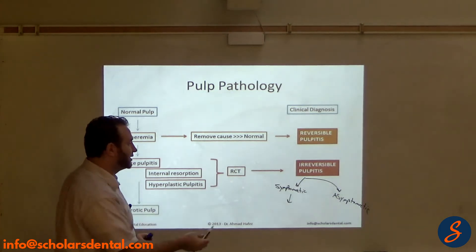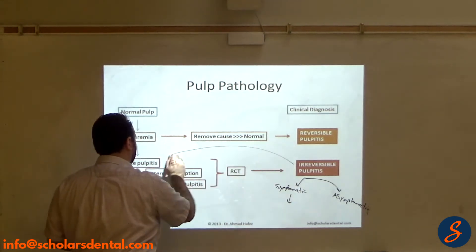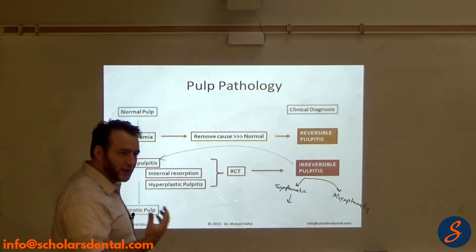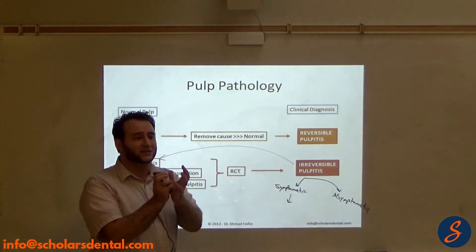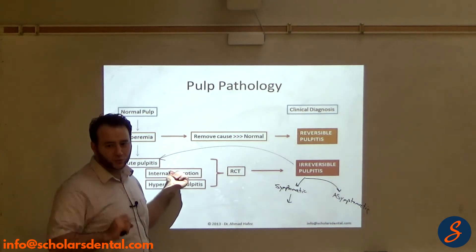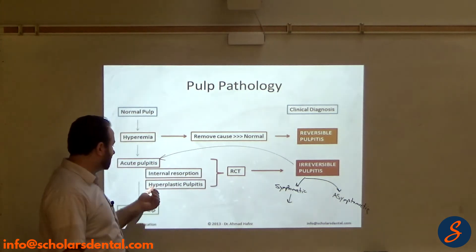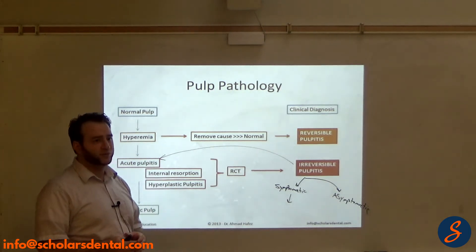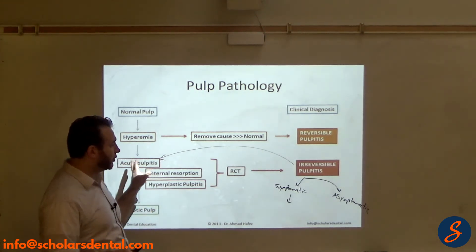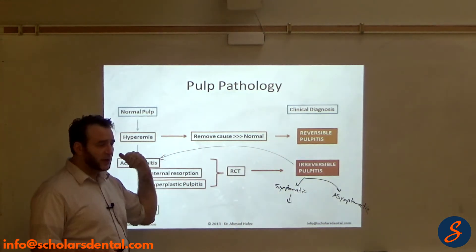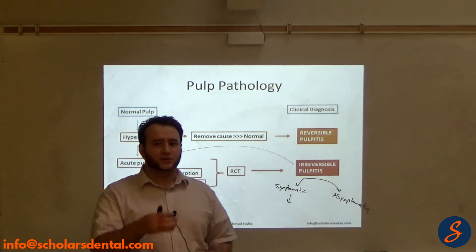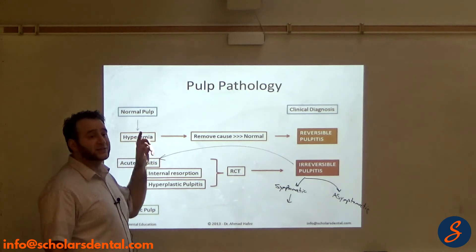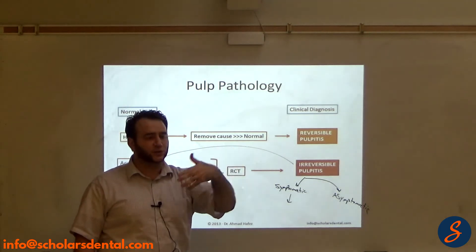Now in AFK, usually when they say irreversible pulpitis they're referring to acute pulpitis. So you want to know both the proper textbook concepts and what they're using in AFK. In AFK, when they want to say internal resorption they'll say internal resorption; they won't say asymptomatic irreversible pulpitis. If they want to say hyperplastic, they'll say hyperplastic or pulp polyp. When they say irreversible, they usually mean the acute type. However, if they bring a question saying all the following statuses of the pulp are irreversible — and bring hyperplastic, internal resorption, acute, and hyperemia — except, you would say hyperemia, it's the only one that's not irreversible, it's the only one that's reversible.